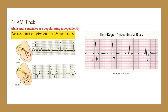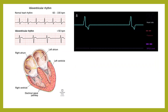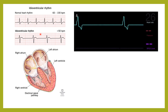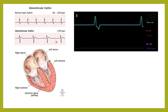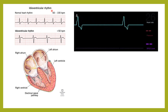Now in complete heart block, what happens? The ventricles beat at a lower rate and this is independent of the atria. When ventricles beat independently, that is independent of the atria, that is known as the idioventricular rhythm, and this rhythm is very slow.